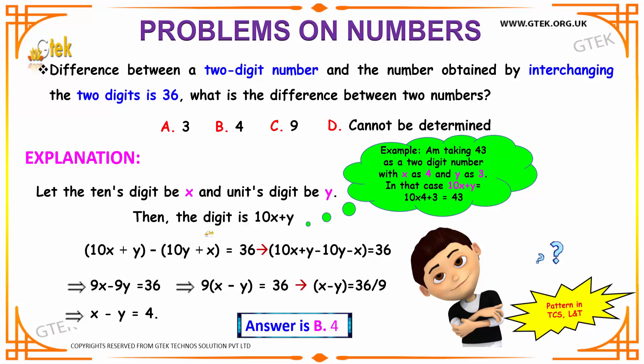It is given that the difference between the number and obtained by interchanging the digits is 36. So your number is nothing but 10x plus y, and the interchange number will be nothing but 10y plus x, as you are interchanging your numbers. And it is given that the difference of these two is equal to 36.